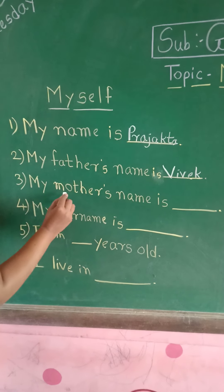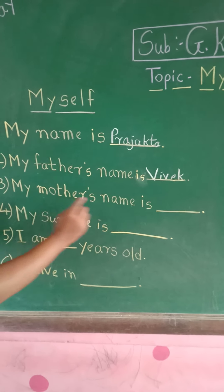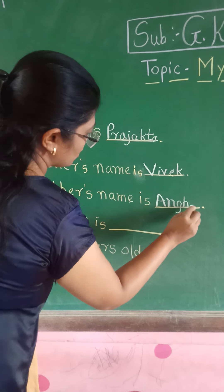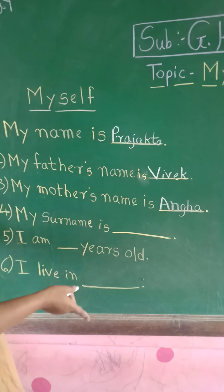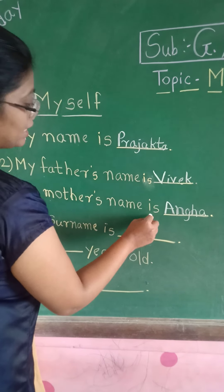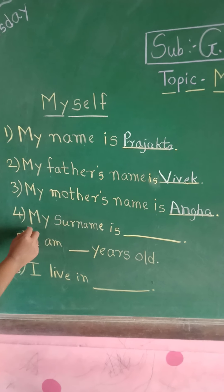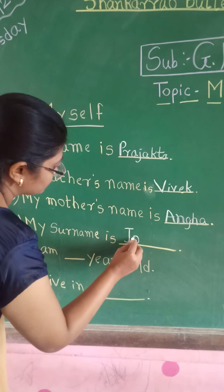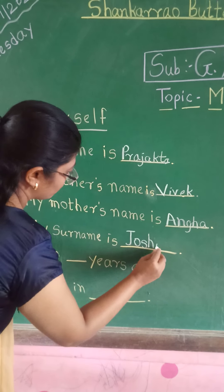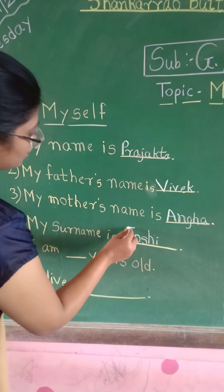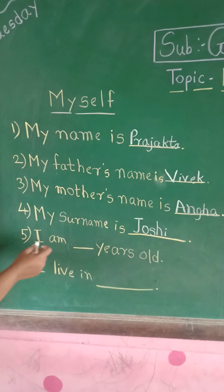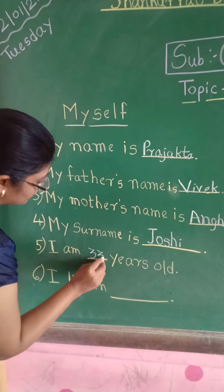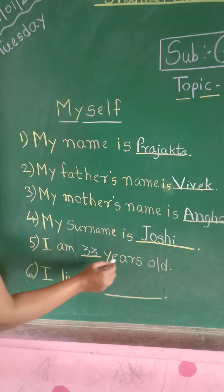Then the next one is: my mother's name is — my mother's name is Anugha. Again, A is capital. So remember students, you have to learn your father's and mother's names and their spellings also. Then, my surname is Joshi. My surname is Joshi. Here you have to write your surname, and J is capital because it is a proper noun. I am blank years old.